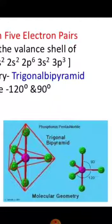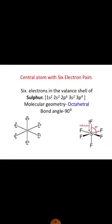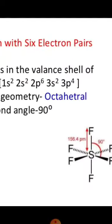Looking at trigonal bipyramidal more closely: the bond angle between equatorial bonds is 120 degrees and the bond angle between axial and equatorial bonds is 90 degrees. One atom is on top, one is on the bottom, and three are in the equatorial plane. So the bond angles change — some will be 90 degrees and some will be 120 degrees. For a central atom with six electron pairs, such as sulfur in SF6, the molecular geometry is octahedral and the bond angle is 90 degrees.